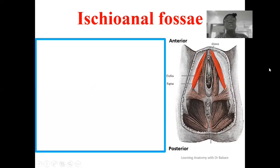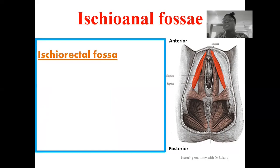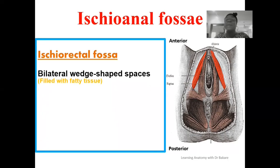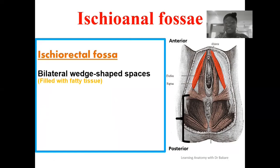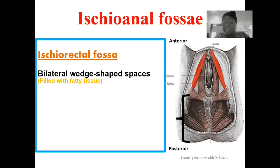The ischioanal fossa can also be referred to as the ischiorectal fossa. These ischioanal fossae are bilateral wedge-shaped spaces located on both sides of the anal canal. Using this image, the region carved out in black is the posteriorly placed anal triangle, with the opening of the anal canal at its central part. On both sides of this space is where we have the ischioanal fossa.